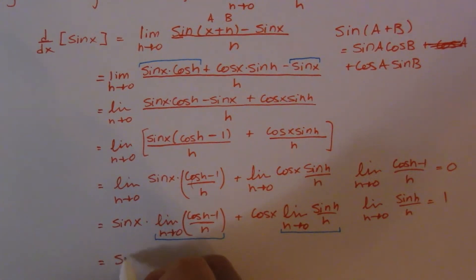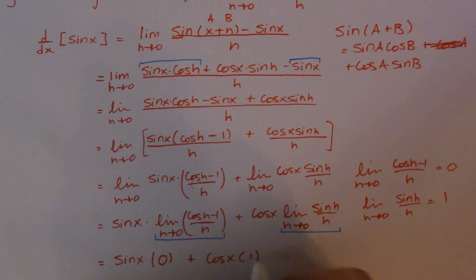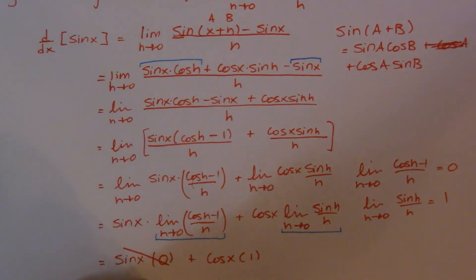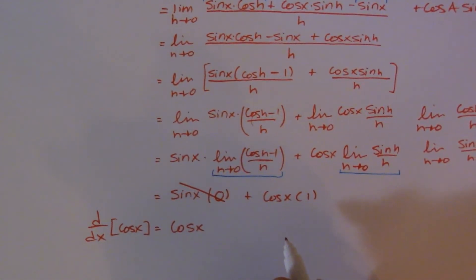What we do, we end up with sine of x times 0 plus cos of x times 1, and then this goes away, so then I'm left with cos of x. Essentially, I proved that the derivative of sine of x is indeed cos of x. You can see that right here.